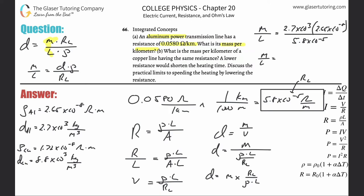And all we got to simply do now is plug it in. Careful, it's going to be per meter. 2.7 times 10 to the 3 times 2.65 times 10 to the minus 8, divided by 5.8 times 10 to the minus 5. So there's going to be about 1.23.